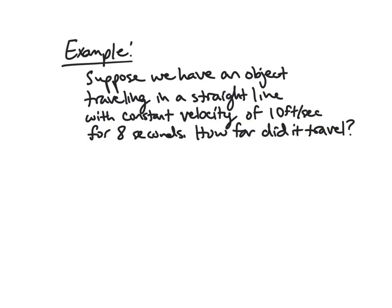So let's try to dig into this through an example. Suppose we have an object traveling in a straight line with constant velocity of 10 feet per second for 8 seconds. How far did this object travel? Should be able to figure out pretty quickly: 10 feet per second, I've got 8 seconds, it's going to be 80 feet. This is 10 feet per second times 8 seconds.